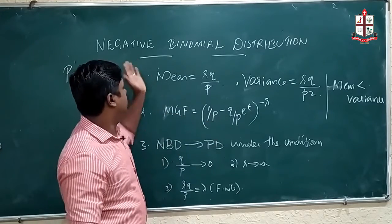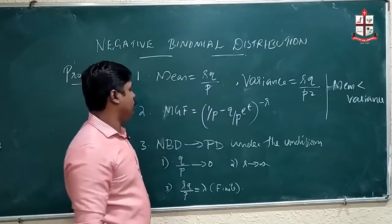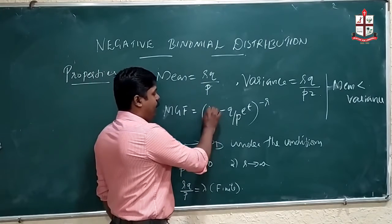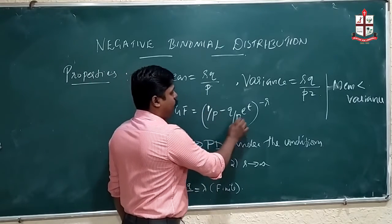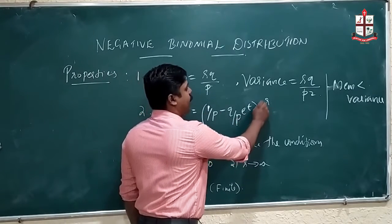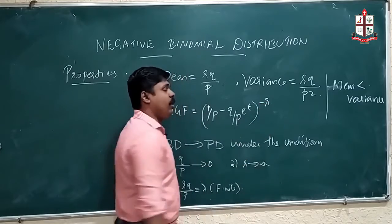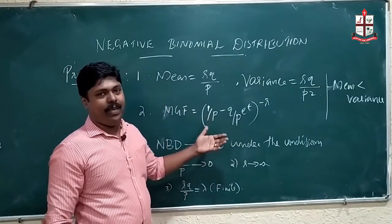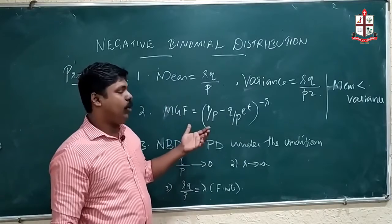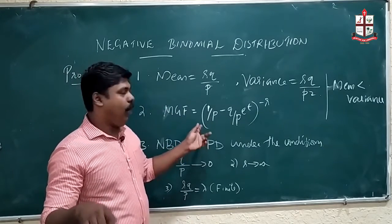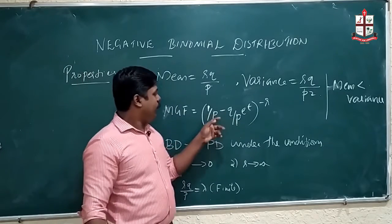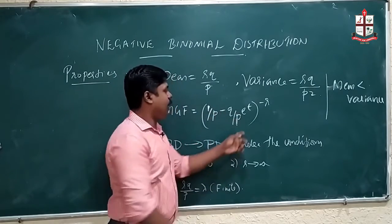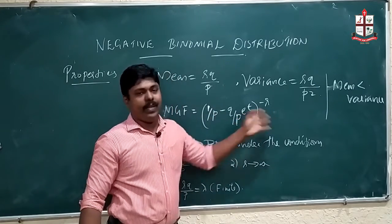The moment generating function of the negative binomial distribution with parameters r and p is: (1/p − (q/p) * e^t)^(−r). For comparison, the MGF of the binomial distribution is (q + p * e^t)^n.